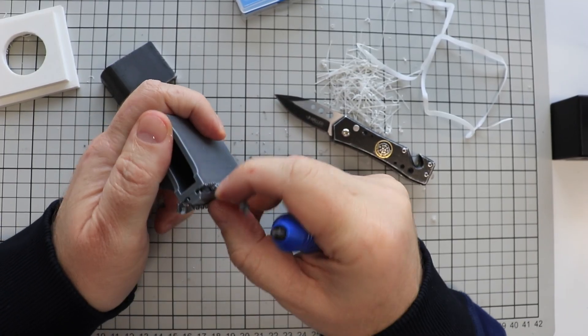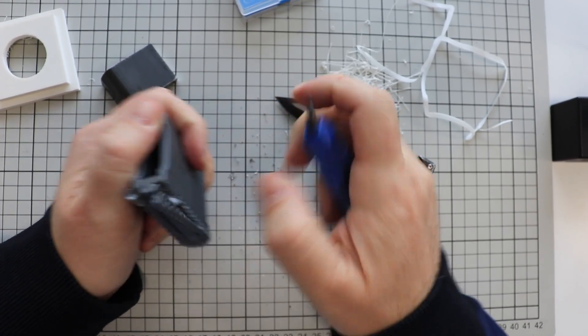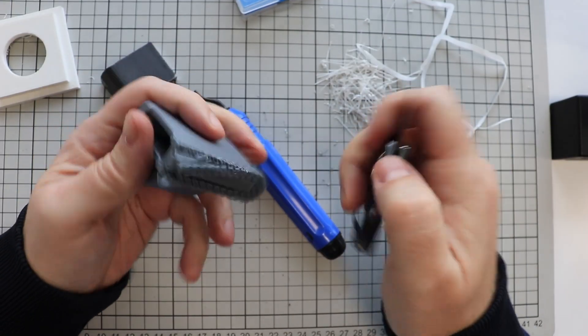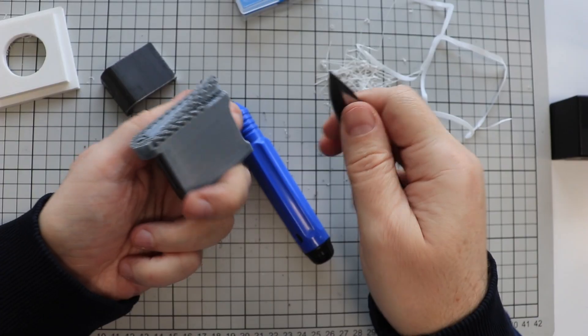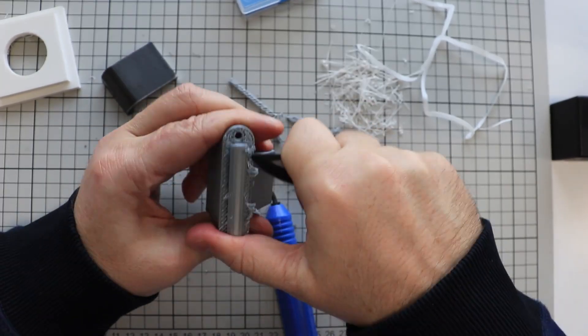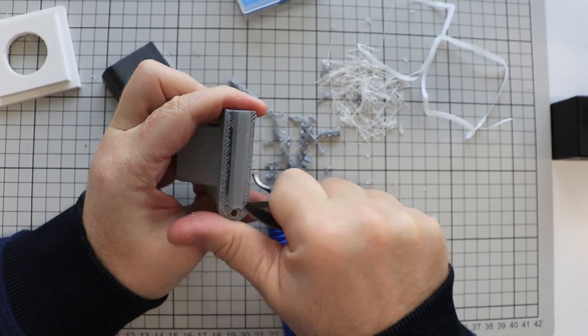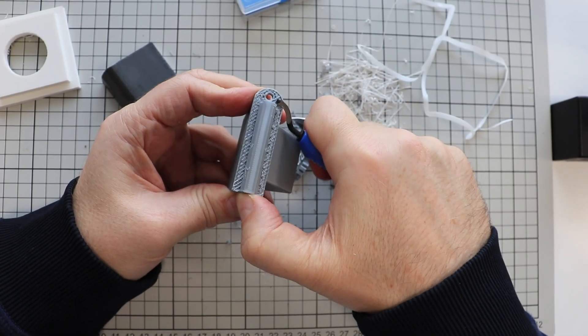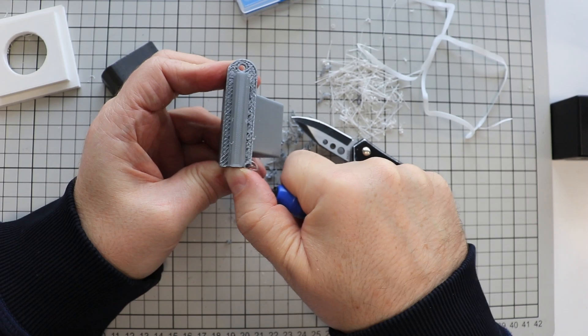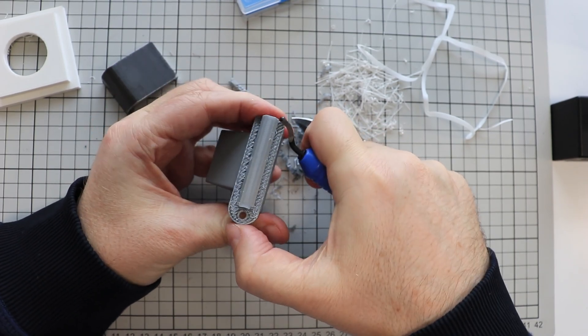Only for working out the edges. So for the brim, elephant foot, sacrificing layer. The supports are not cleaned completely, but let's try to work on the edges. And yes, for that definitely the deburring tool is great.